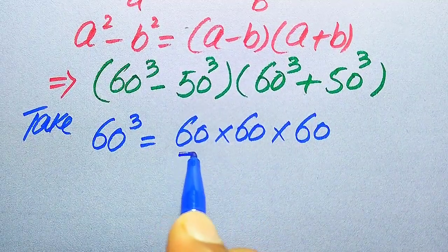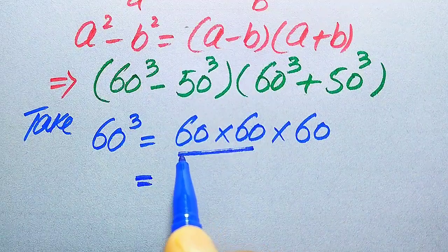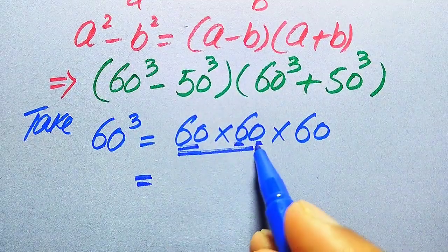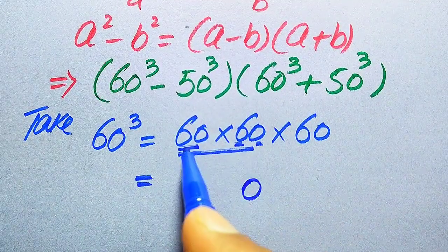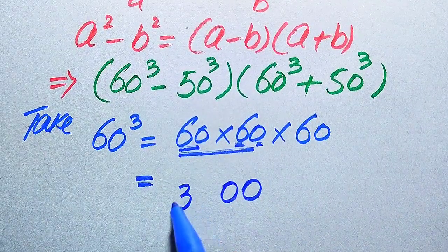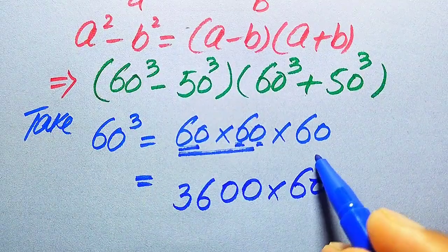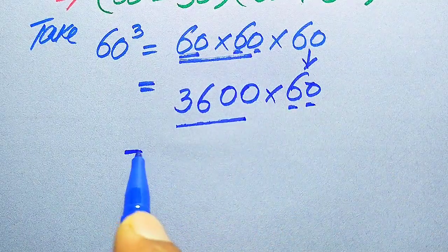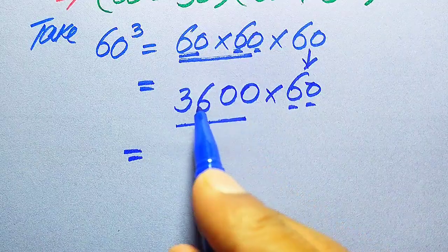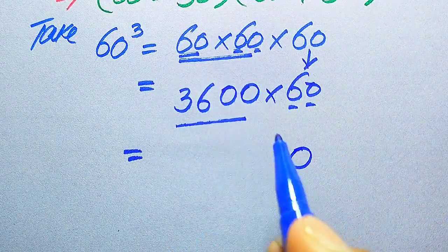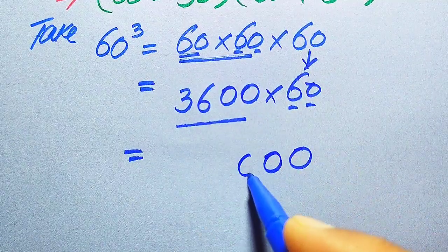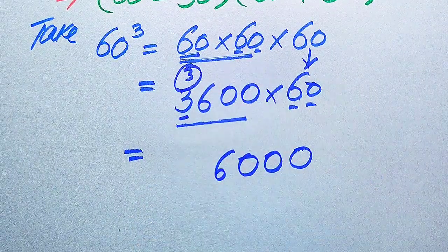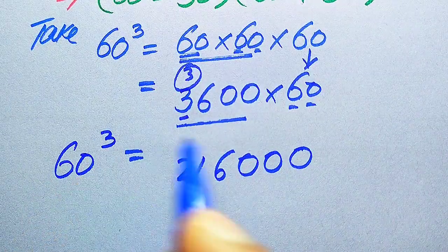To compute 60 cubed, first we multiply 60 × 60. Treating it digit by digit: 0 times 60 is 0, and 6 times 60 gives 6×0=0 and 6×6=36, giving 3600. Then 3600 × 60: 0 times 3600 is 0, and 6 times 3600 gives 6×0=0, 6×0=0, 6×6=36, write 6 carry 3, then 6×3=18 plus 3 is 21. So 60 cubed equals 216,000.